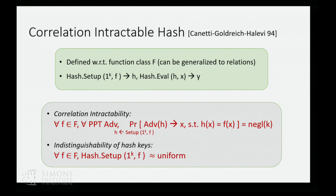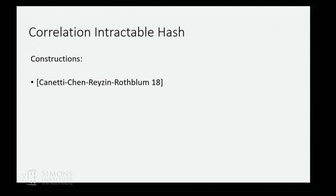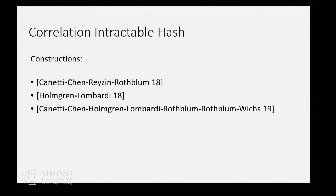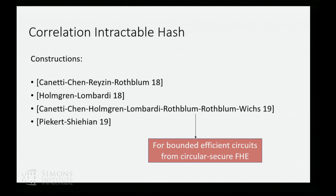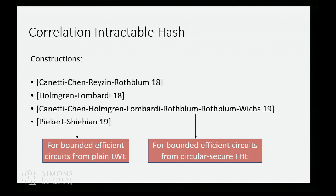There have been a bunch of recent constructions of correlation intractable hash functions for various families of functions based on different assumptions — the work of Canetti, Chen, Raisin, and Rothblum; the work of Holmgren and Lombardi based on various less-standard assumptions; and more recently the work of Canetti, Chen, Holmgren, Lombardi, Rothblum, Rothblum, and Wiggs, as well as the works of Peikert and Shehan, which got constructions based on circular secure FHE and plain LWE respectively. These were used to get the first constructions of non-interactive zero-knowledge from plain LWE.